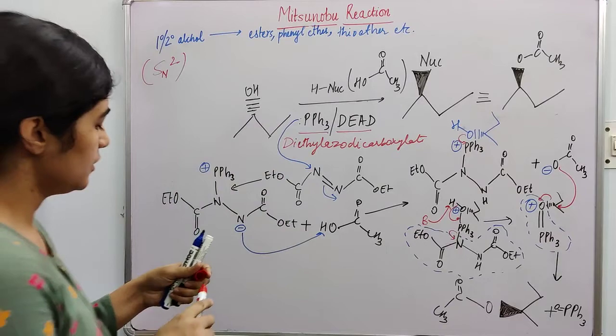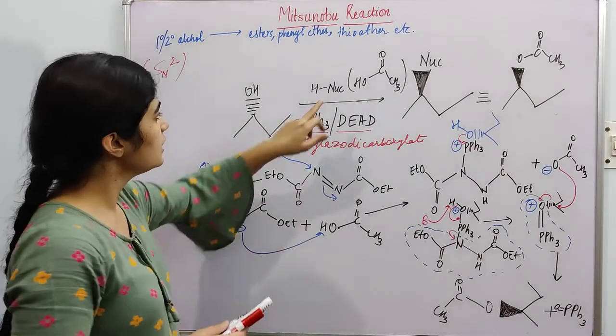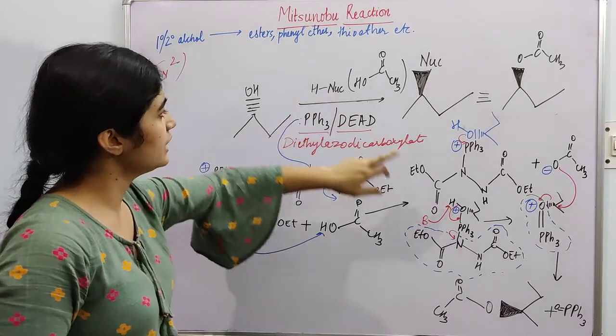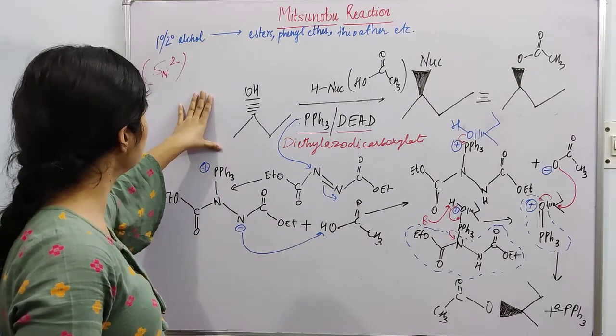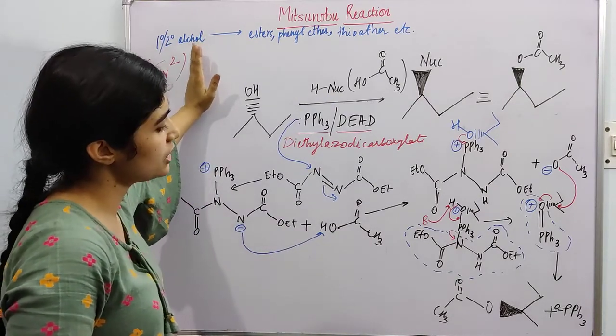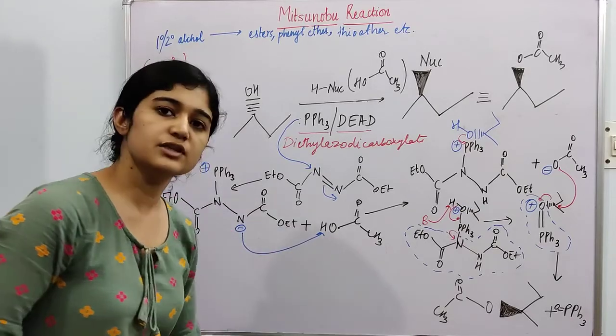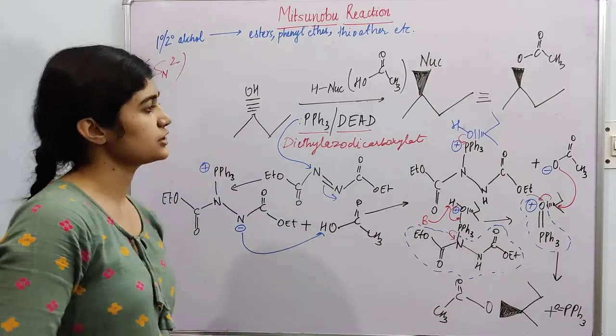So depending upon the different type of nucleophile you are taking in this reaction, you will get different products. So in this reaction, what is basically happening? Your primary or secondary alcohol is getting converted to the ester with an inversion of configuration.